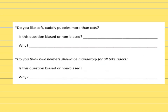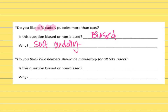Two more. This one says: Do you like soft, cuddly puppies more than cats? When you're looking for influential words, 'soft' and 'cuddly' — even though they didn't say any bad words towards cats — are trying to influence people by saying that puppies are soft and cuddly, even though sometimes dogs can be mean too. Those words are your influential way of trying to get people to pick dogs, so this question would be biased.